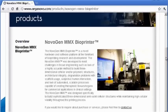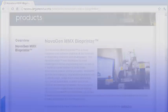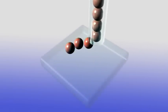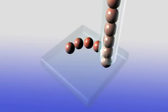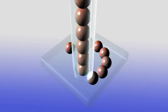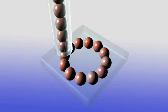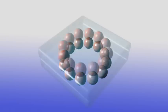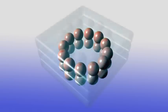Their Novagen MMX bioprinter first prints out a layer of biopaper gel. Bioink spheroids, each containing tens of thousands of cells, are then injected into this water-based material. More layers are subsequently added to build up the final object.